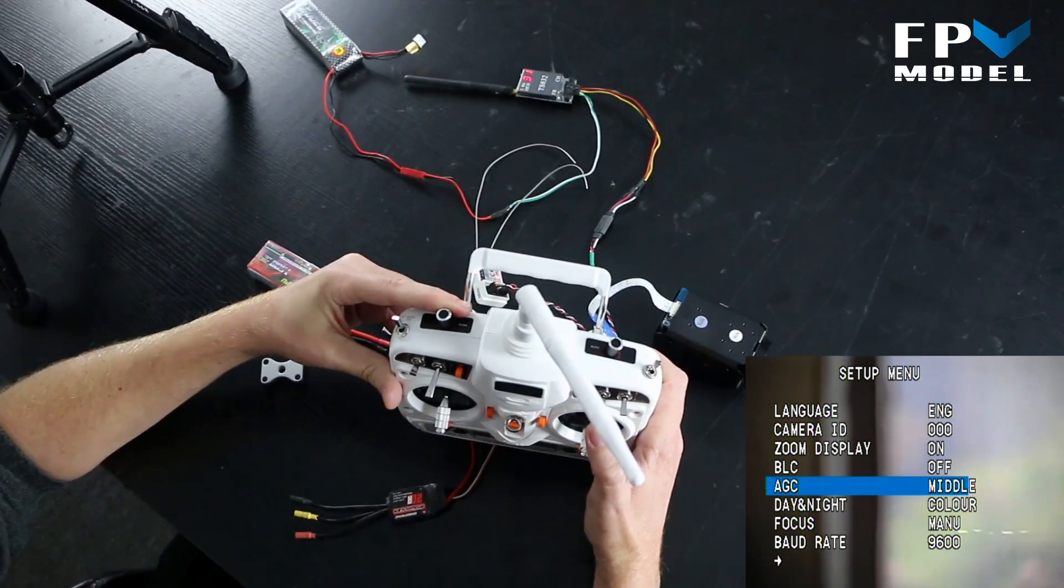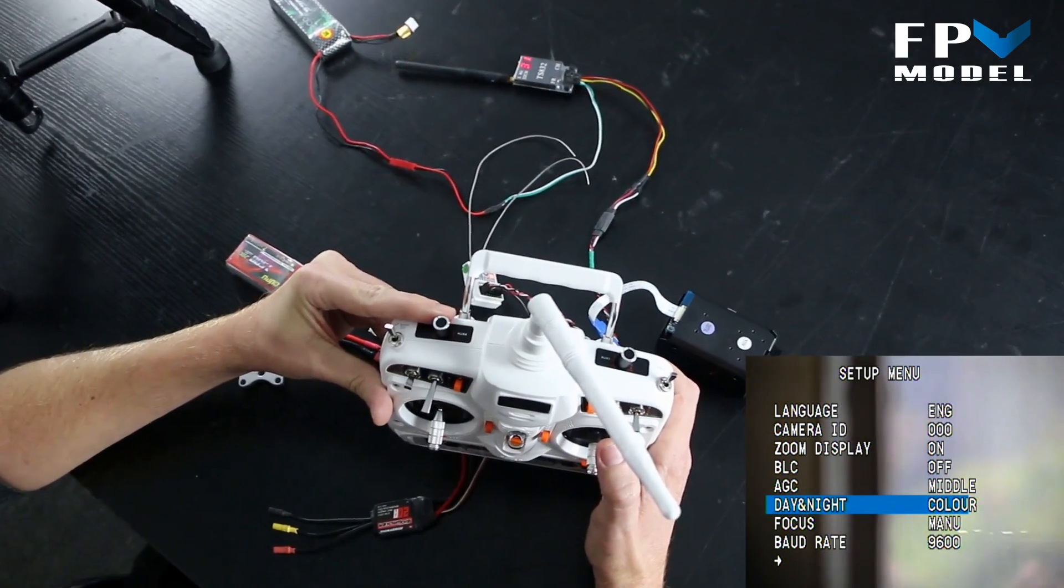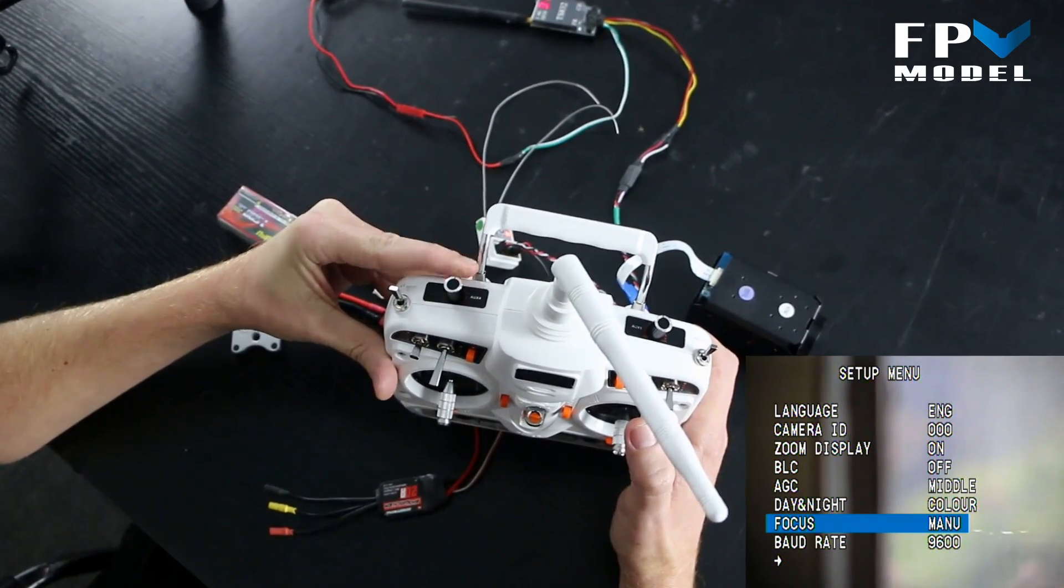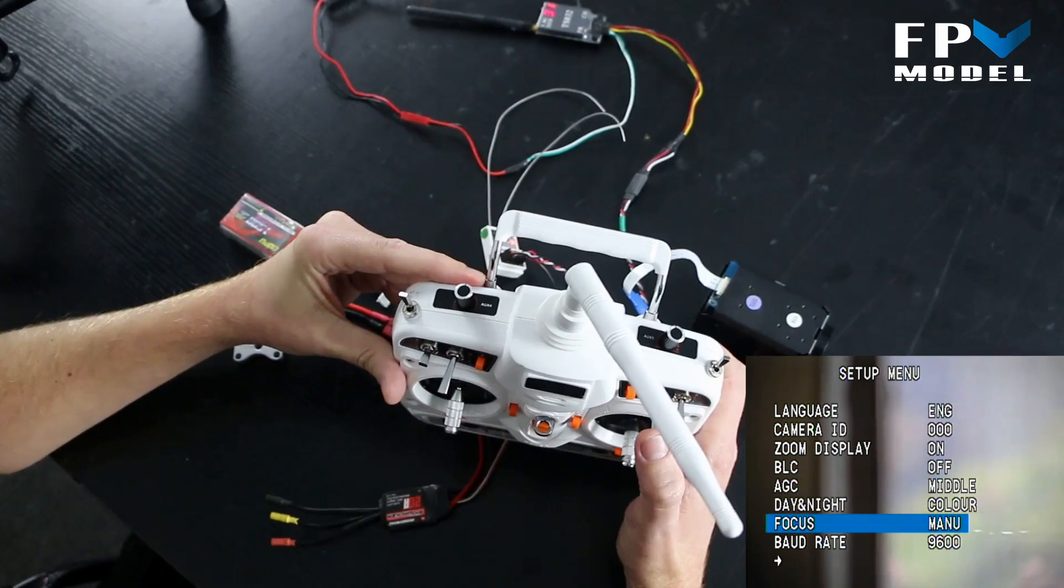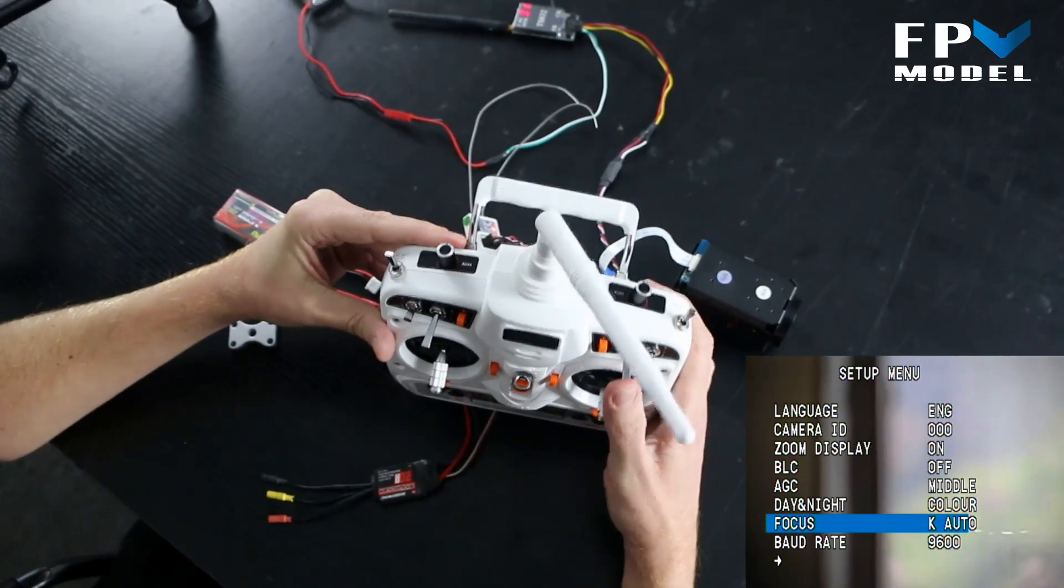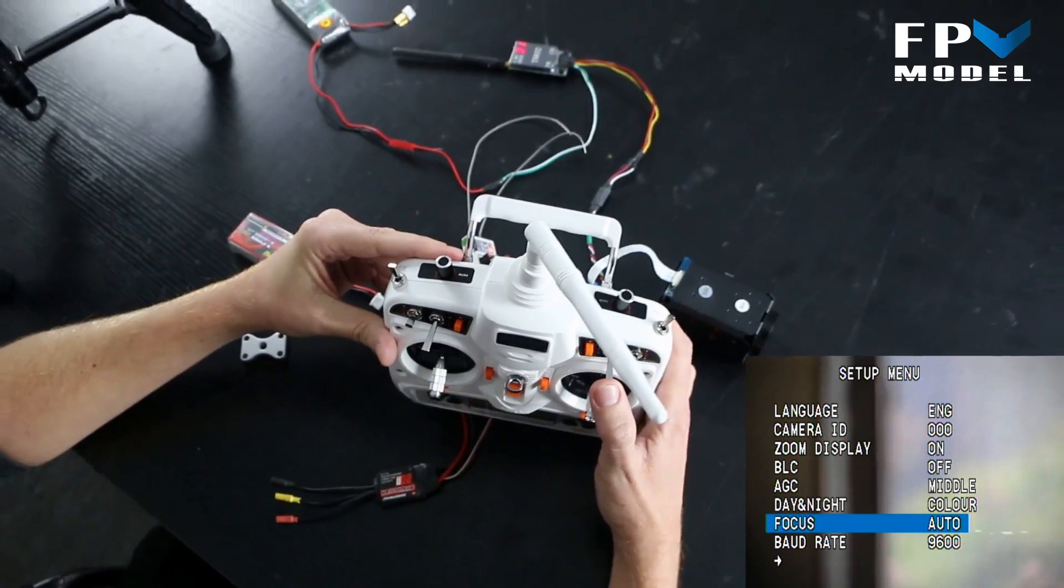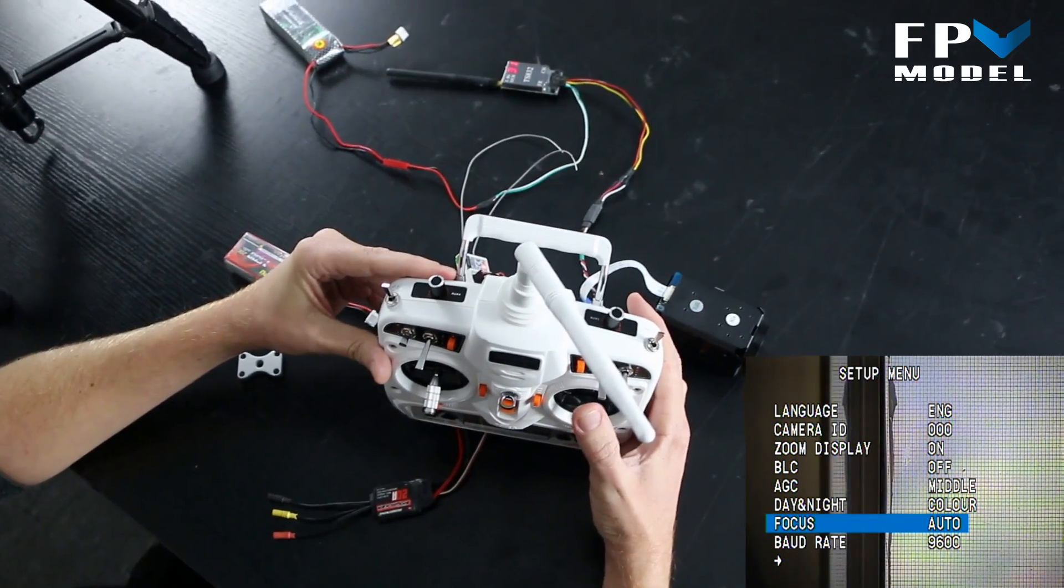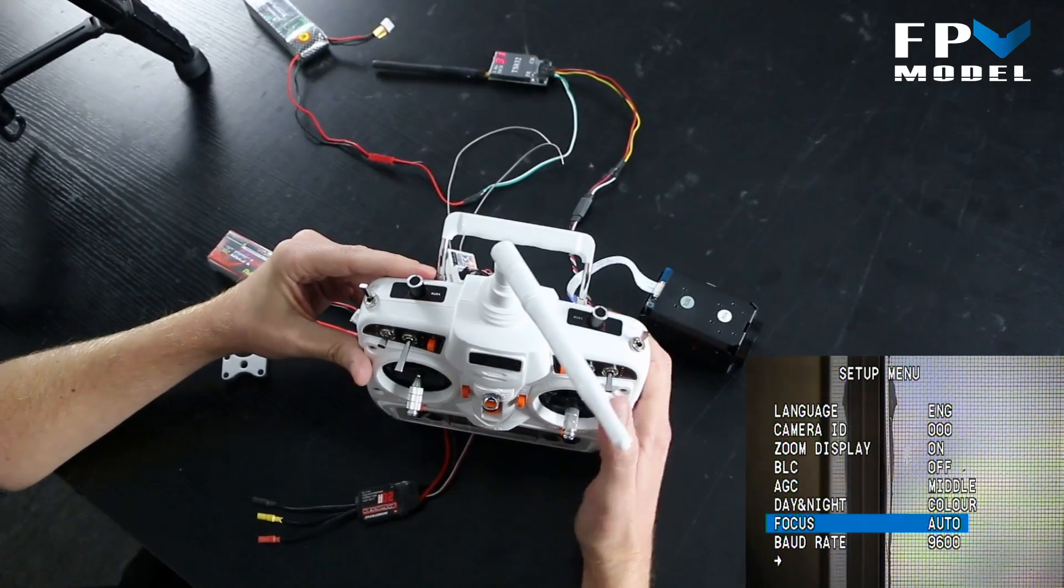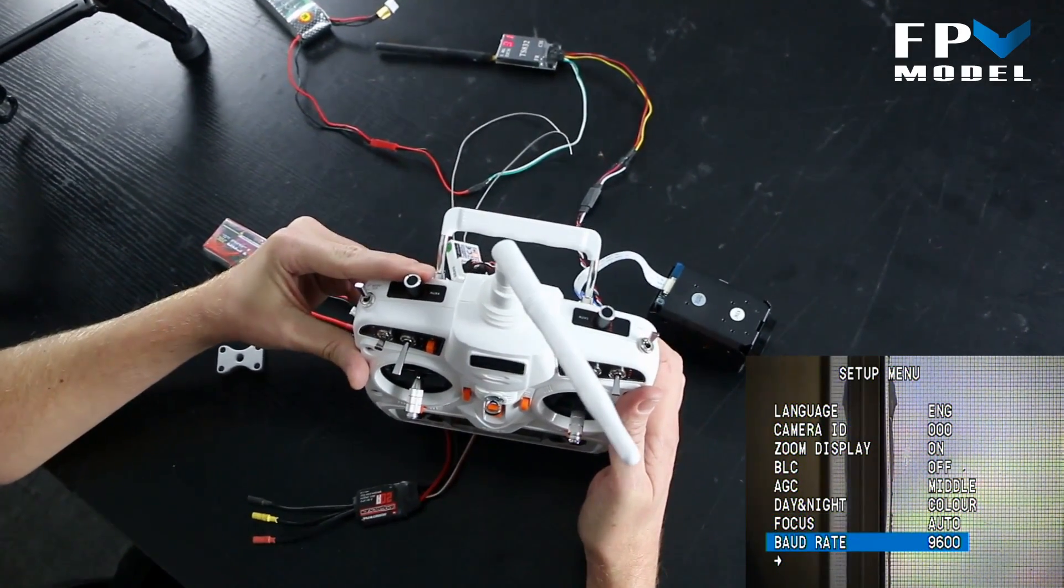Now let's go ahead and move it to focus. Once we get to focus, center the dial knob out again and then take your switch and click it one time, another time, and we're in auto focus. So now the camera is set to auto focus as you can see here.